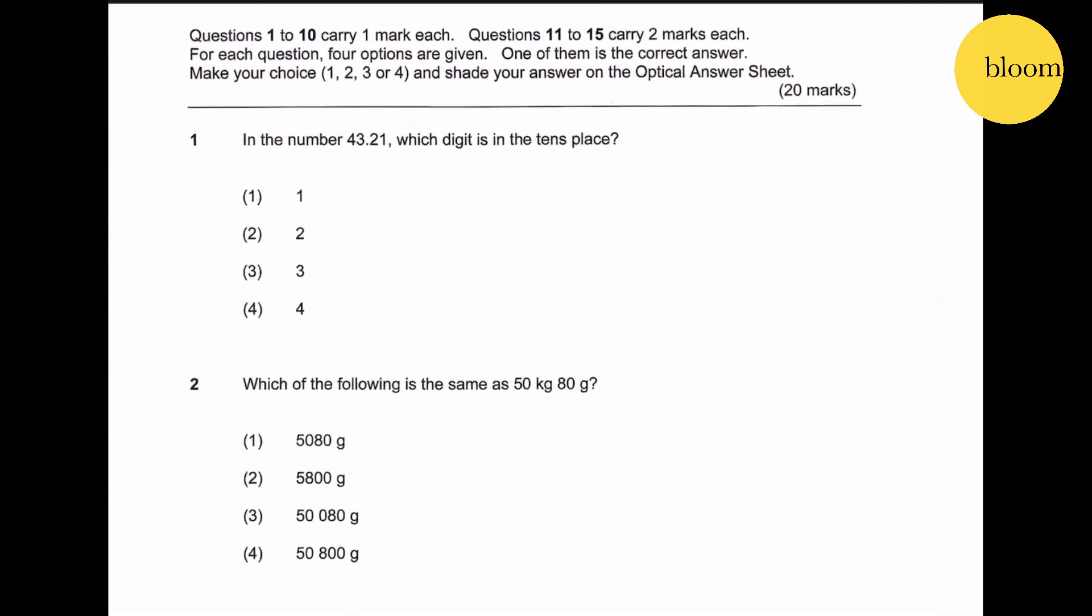Question number one: in the number 43.21, which digit is in the 10th place? Decimal one, ten, one hundred - this would be one, this will be ten. So four, three point two, one. Therefore, this is the answer.